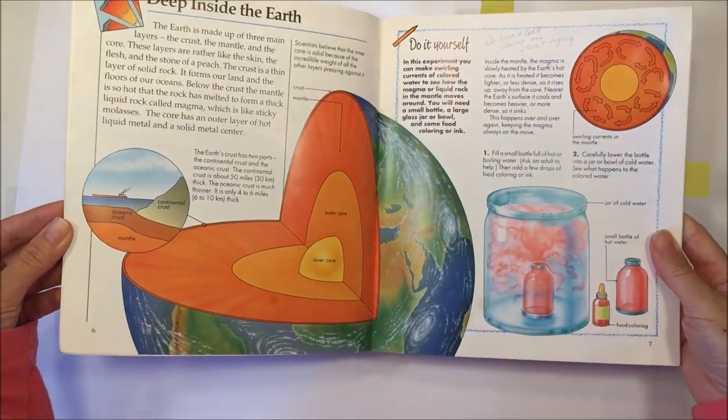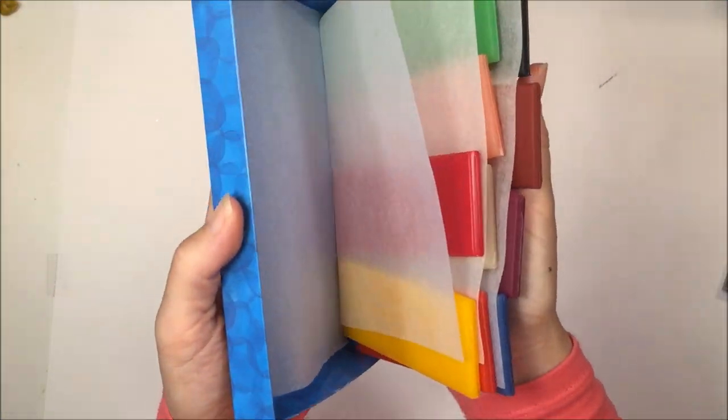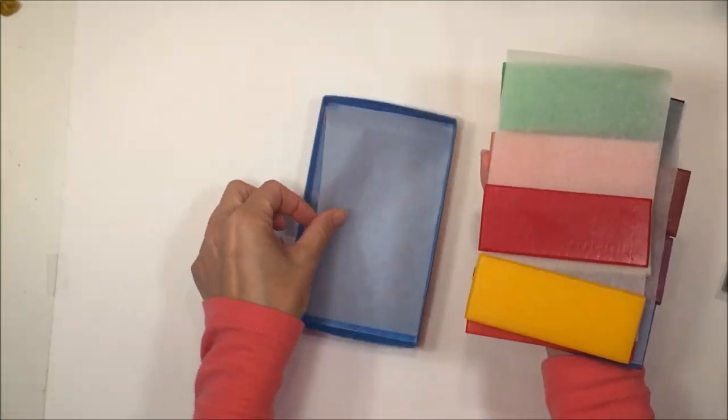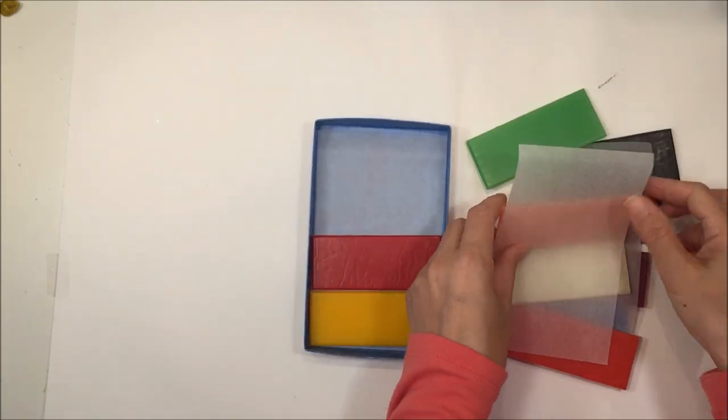We are going to be making the same model earth and then cutting it open. So we're using some wax. This is beeswax from achildstream.com. You can see this in a recent haul of mine and we are just going to be using a few different colors.